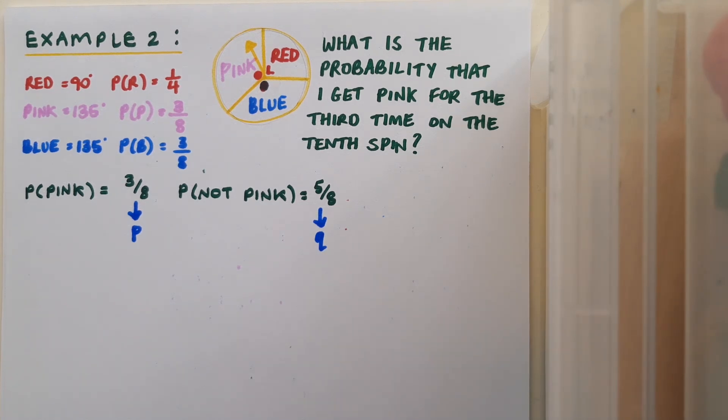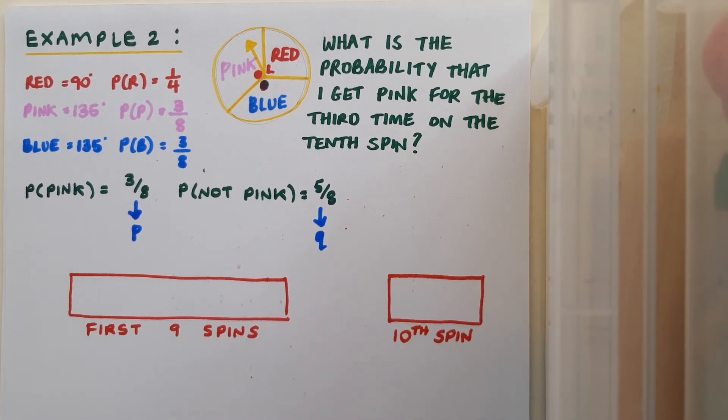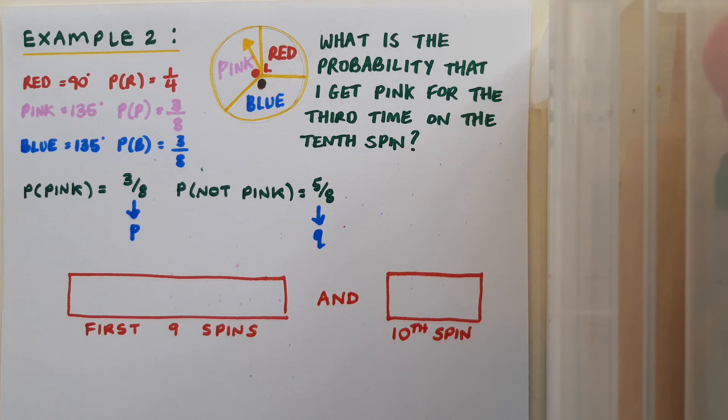Like in the previous example, I want to get a particular outcome on a particular event. So I'm going to actually have to split my situation up again. How do you think I'll split it up this time? This time I'll split it up into the first nine spins, and then separately the tenth spin. And I want a particular set of outcomes in the first nine spins, and I want a particular outcome on the tenth spin. So in the first nine spins, I want to get pink twice. And I want my third pink to be on the tenth spin. So I want the tenth spin to have an outcome of pink.